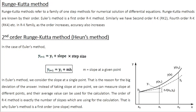In the previous class we discussed about how to solve ordinary differential equations using Euler's method. Euler's method is not a very accurate method because there you find the slope only at a single point. You can improve upon it by calculating slopes at multiple points, and this type of method is known as the Runge-Kutta method.